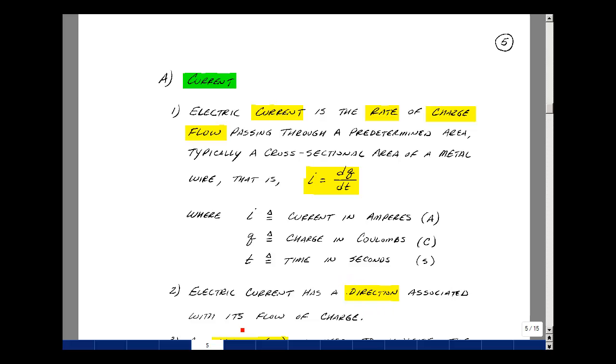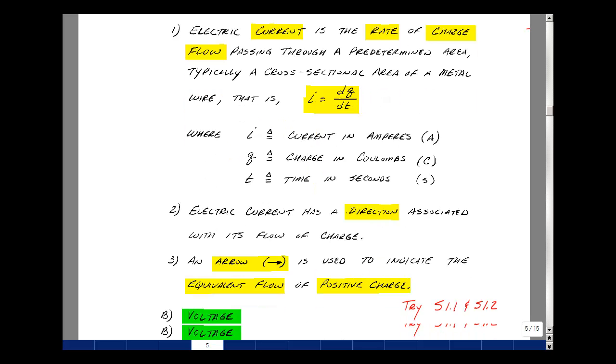Electric current has a direction associated with its charge flow, just like water in a pipe. We use an arrow to indicate the equivalent flow of positive charge.